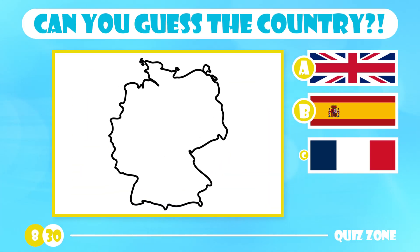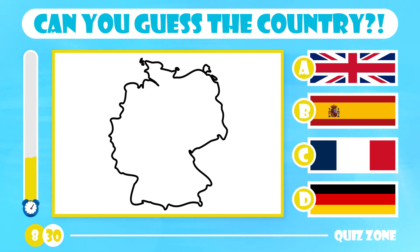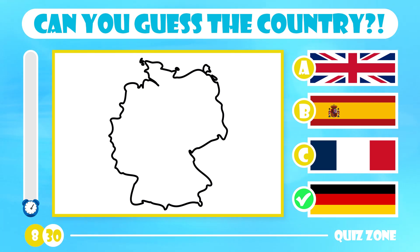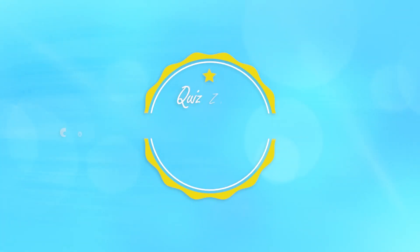Can you name this country? Is it the UK, Spain, France or Germany? The answer is Germany. Germany is located in Central Europe and covers an area of 357,021 square kilometers. The country is a 21st century economic powerhouse boasting a highly developed society.